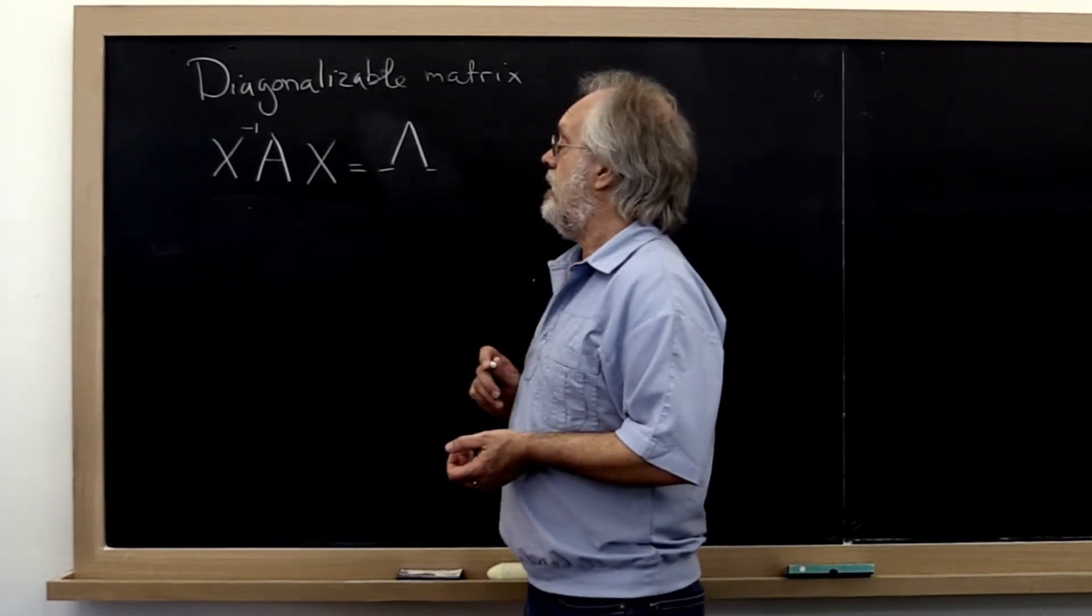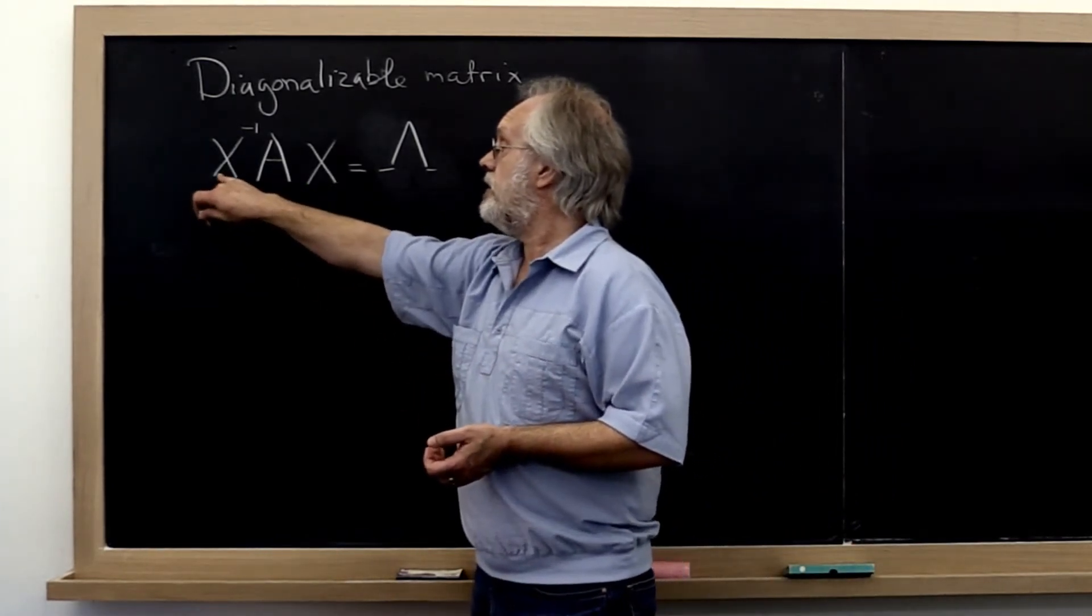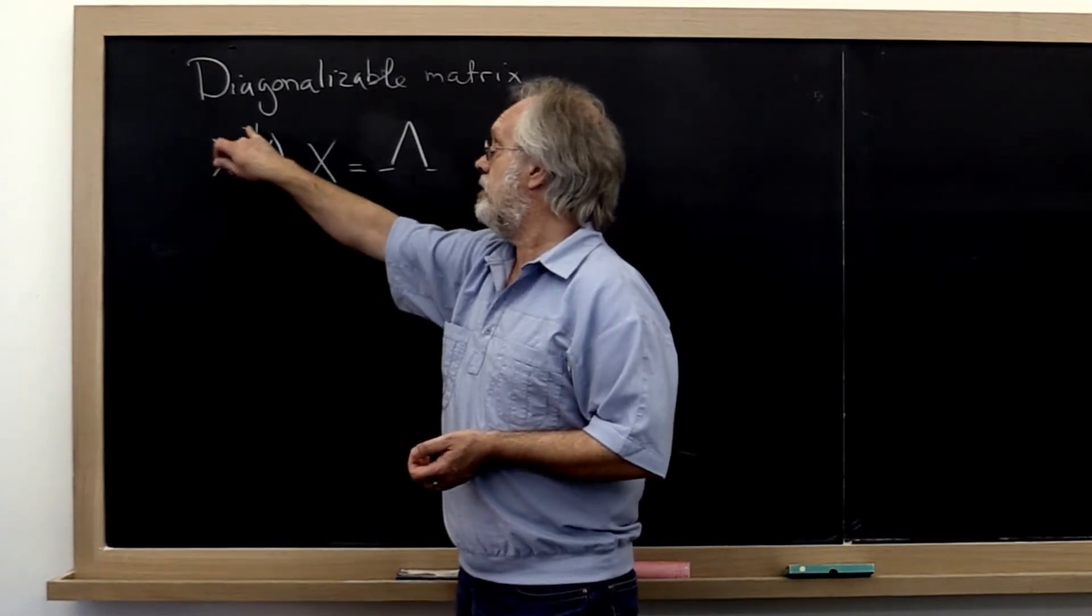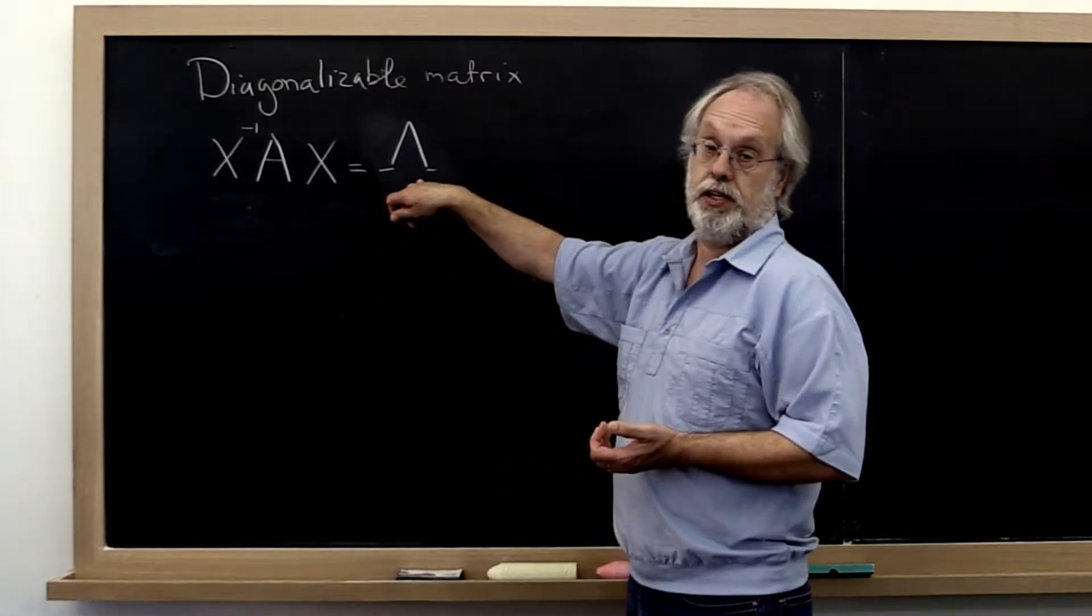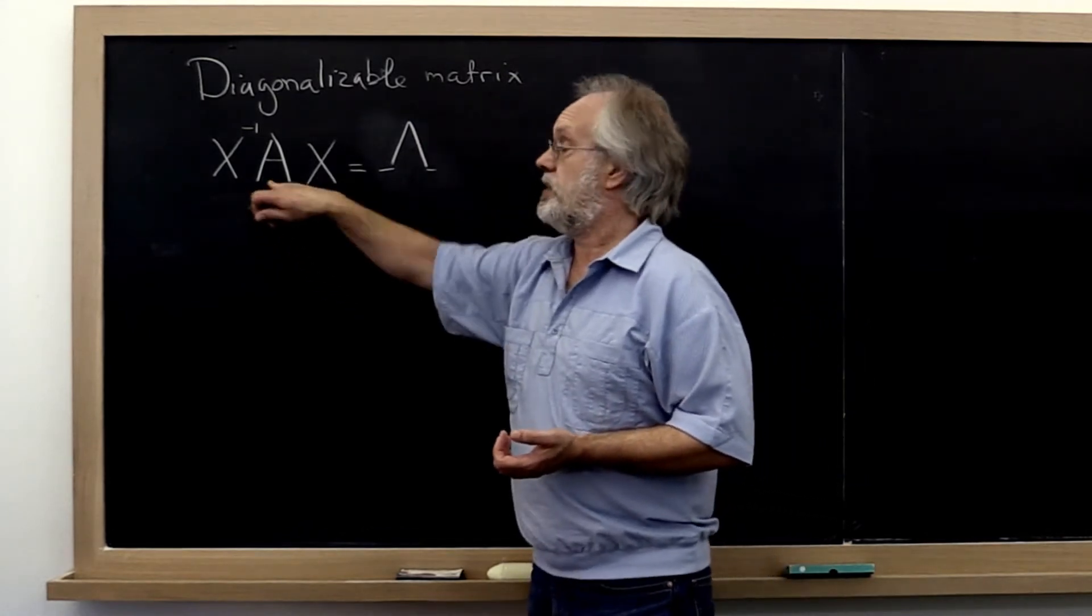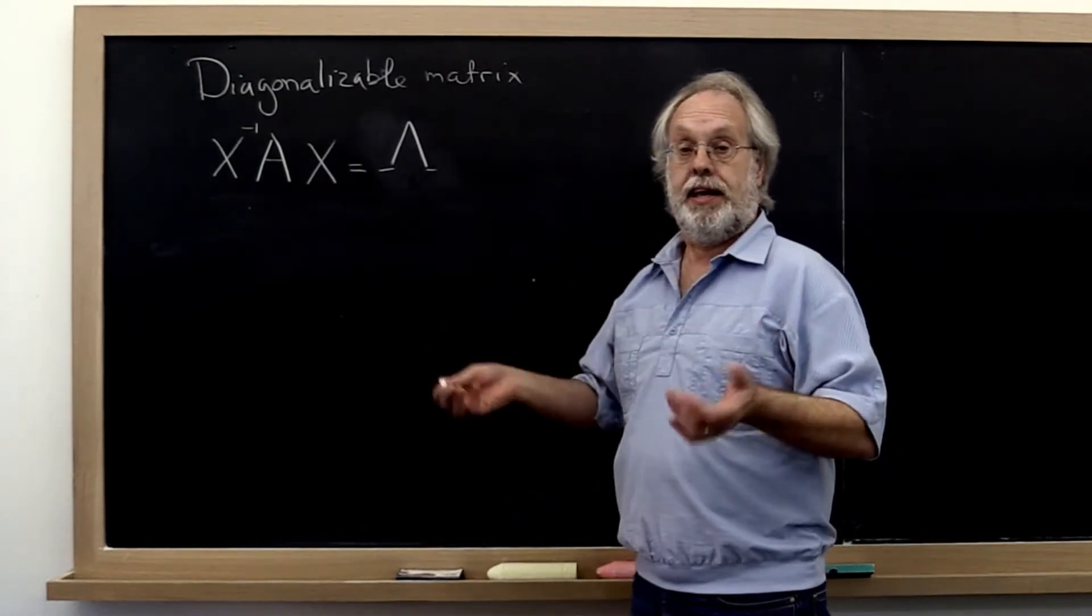Well, if we have a square matrix A and there is a non-singular matrix X such that X inverse A times X is equal to a diagonal matrix, then that matrix A is said to be diagonalizable.